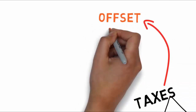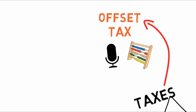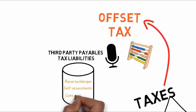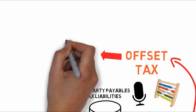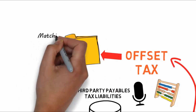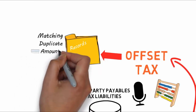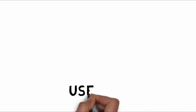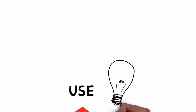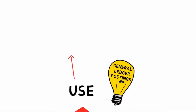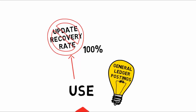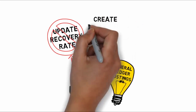Now let's talk about offset taxes. An offset tax calculates and records third-party payables tax liabilities for reverse charges, self-assessments, and in the United States, consumer use tax. An offset tax record is the matching duplicate record with negative amounts that reduces or completely offsets the tax liability recorded in the tax transaction. Use offset taxes when the tax requirement includes creating offset general ledger postings. You cannot update the recovery rate on an offset tax line.